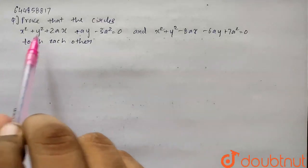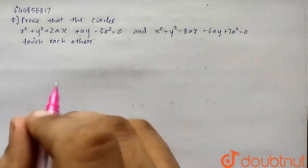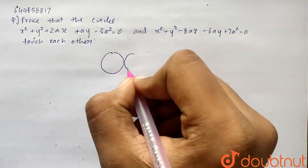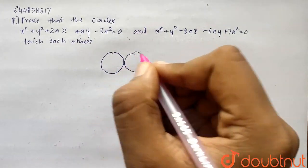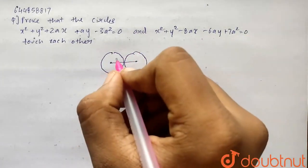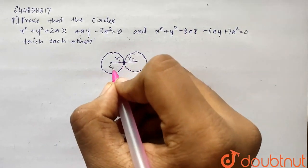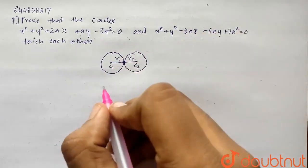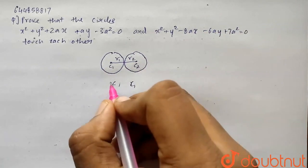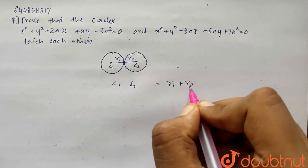Hello students, so the question for today is we have to prove that the given two circles are touching each other. If the two circles are touching each other, the distance between both the centers should be equal to R1 plus R2. So let the centers be C1 and C2. We have to prove that the distance between these points is basically R1 plus R2.